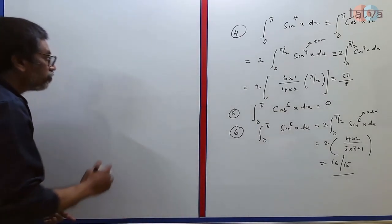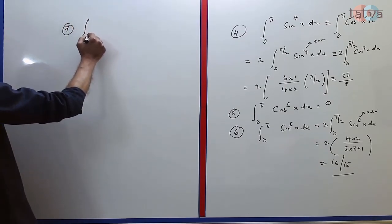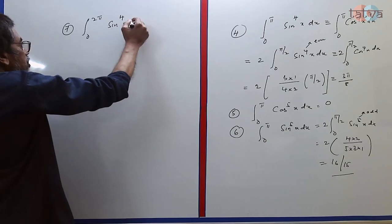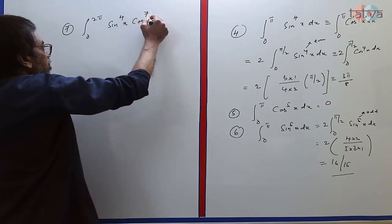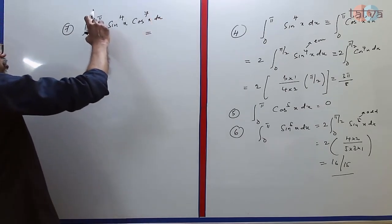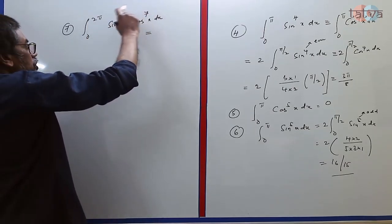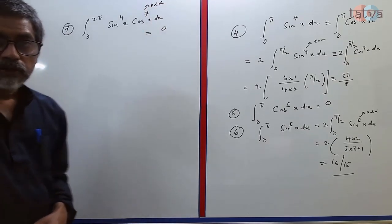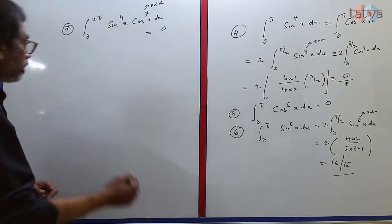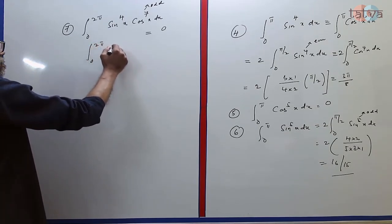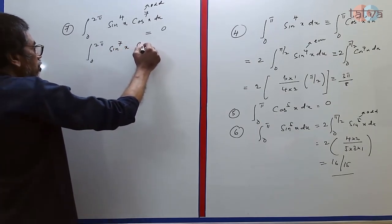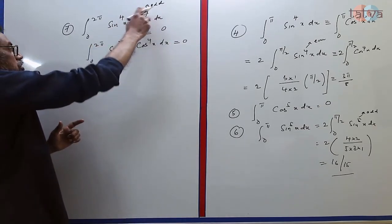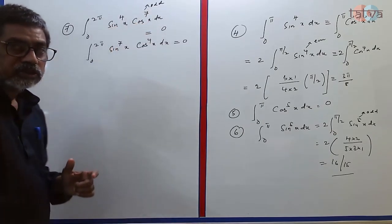In my next example, let me go to a 0 to 2π situation where I have, let us say, sin^4 x cos^7 x dx. In the 0 to 2π range, observe the power of sine and cos. Any one of them is odd. Don't waste your time, the output is 0. Remember, it happens only 0 to 2π. 0 to 2π sin^7 x cos^4 x dx is also 0. So in 0 to 2π, whether it is cos or sine which carries an odd power, or both carry odd powers, the output is 0.